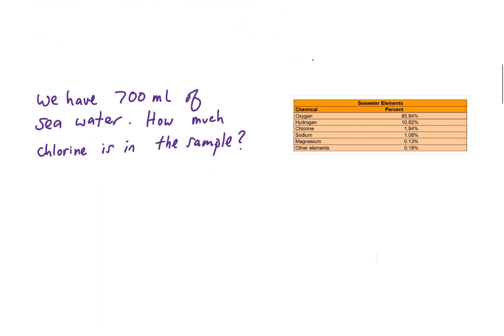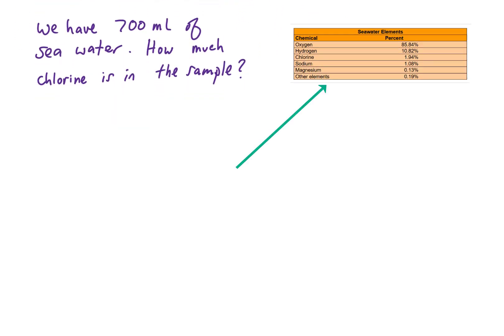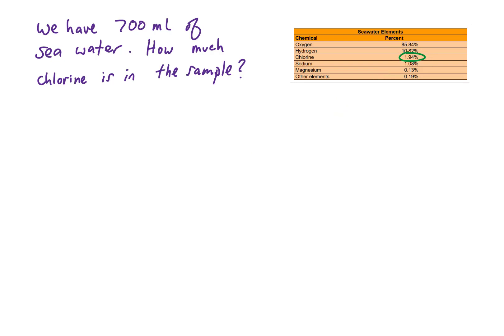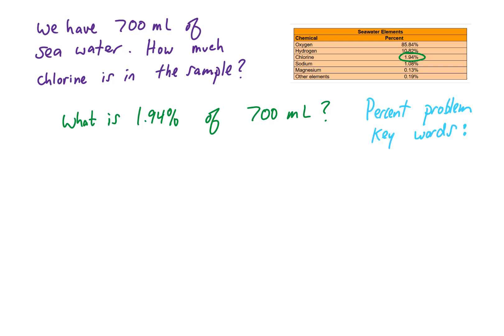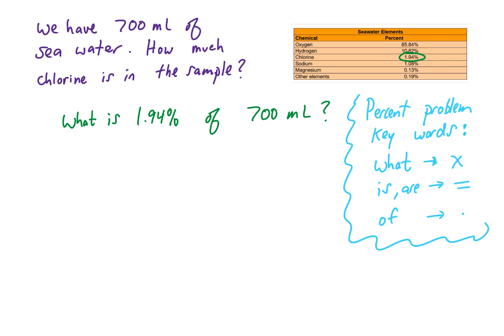Let's take a look at a problem. We have 700 milliliters of seawater. Seawater can be broken down into elements shown in the table to the right, and we want to know how much chlorine is in this sample. From the table, chlorine is 1.94% of seawater, so the question becomes: what is 1.94% of 700 milliliters? There are key words to look out for in percent problems: the word 'what' is associated with an unknown x; 'is' is associated with an equal sign; and 'of' is associated with multiplication.